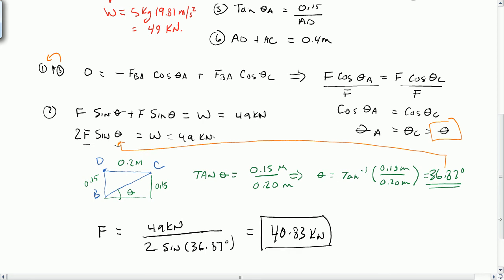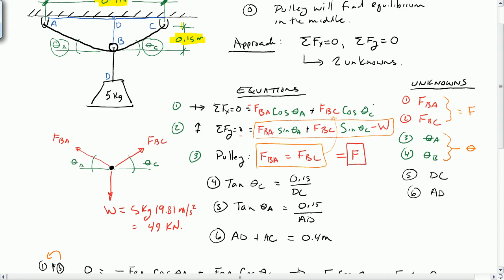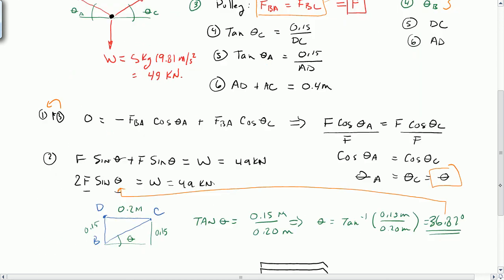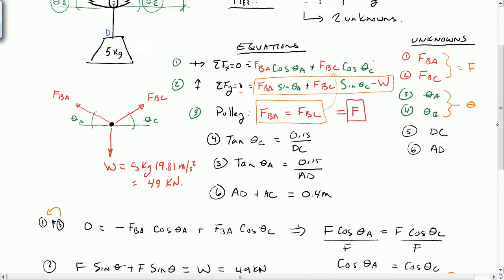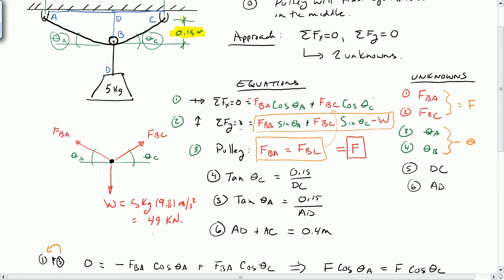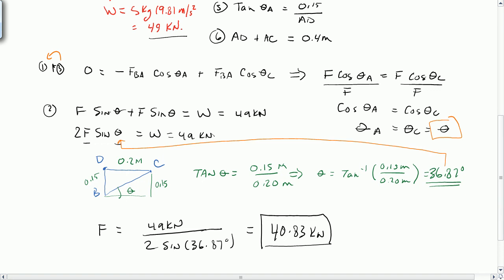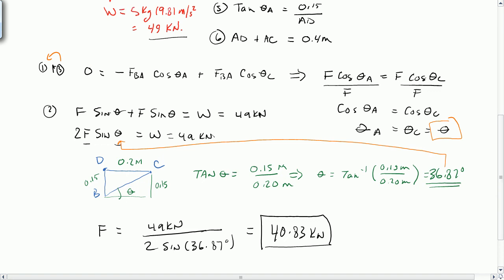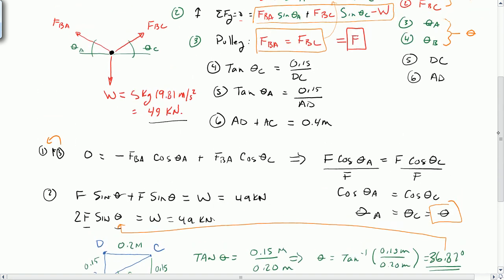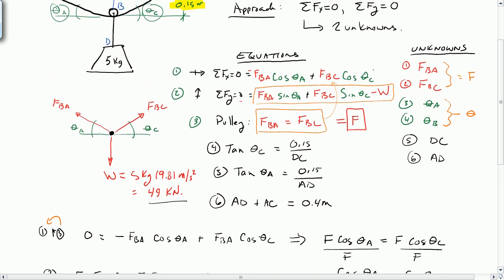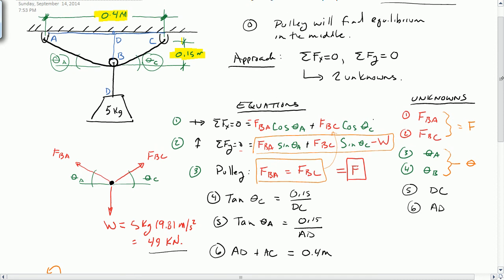So what we've done here is we've solved for F. Again, F is the same as FAB which is the same as FBC which is the force in the chord. It's a common force. Now we ask ourselves, does it make sense? My entire weight is 49 kN. Each cable has 40 kN, almost 41 kN. Because of the shallow angle it makes sense that it should be quite a bit higher when I add two of them, and so I feel pretty good about my answer.